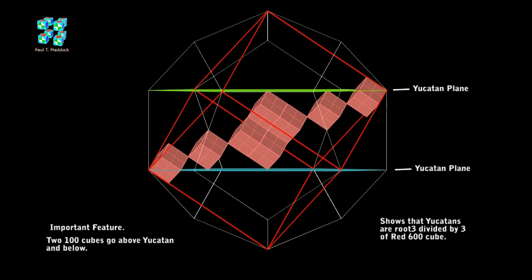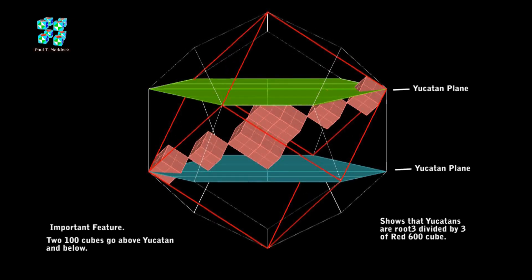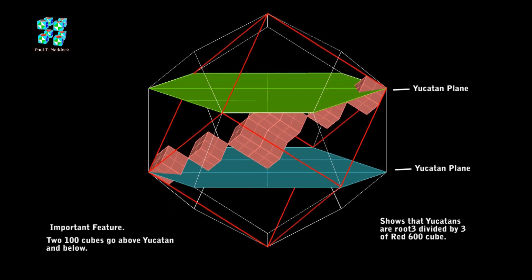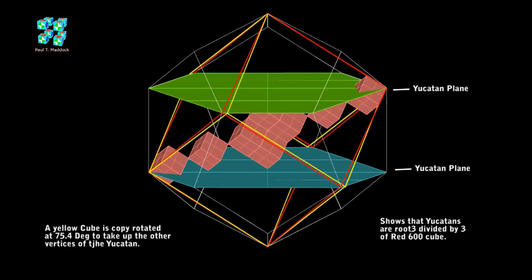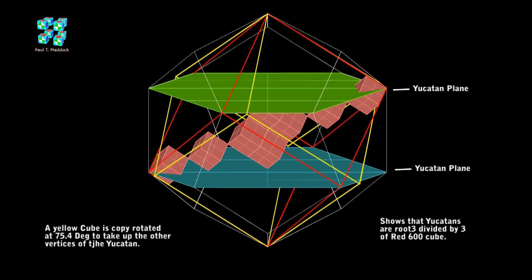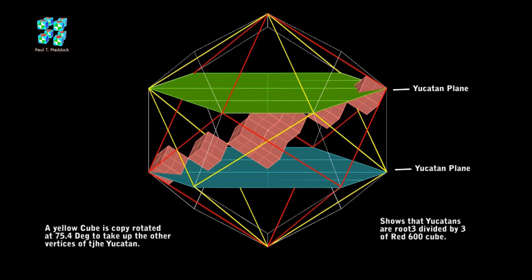Now I'm going to rotate the assembly to show you the Yucatan planes better. You can see there are 6 vertices on the Yucatan. Now if we rotate a copy of that red cube at 75.4, which is the golden ratio, we can now give it a yellow cube, and that takes up the other vertices.